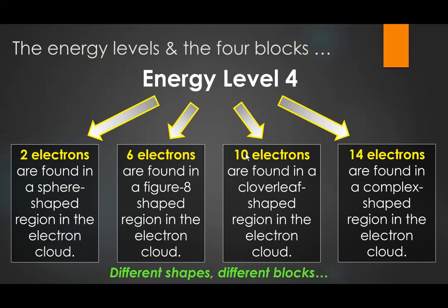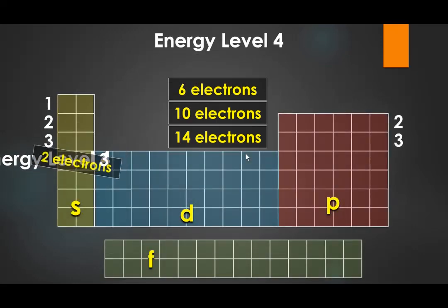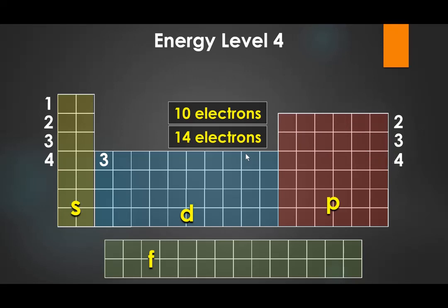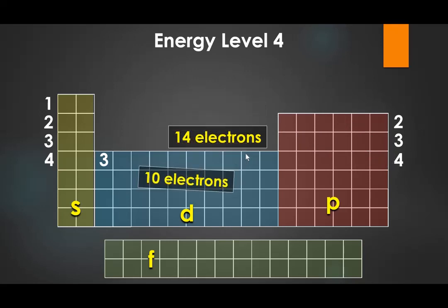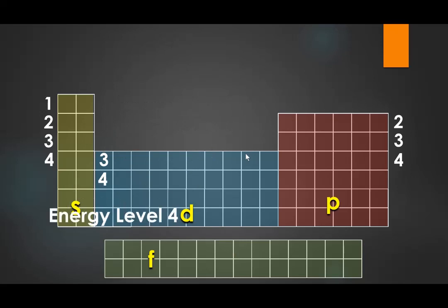Level 4 has 2 sphere-shaped electrons in 4S, 6 figure-8 electrons in 4P, 10 cloverleaf electrons in 4D, and 14 complex-shaped electrons in the F section. So we've assigned energy levels 1, 2, 3, and 4. We can extend the idea and keep counting to 7 — just add on and continue until we run out of periodic table.